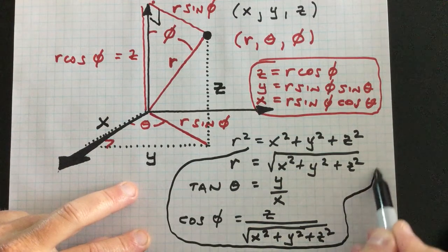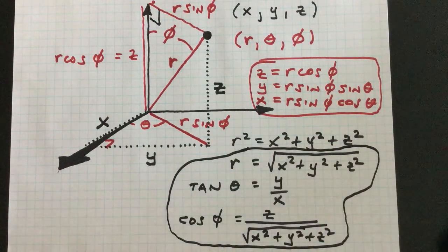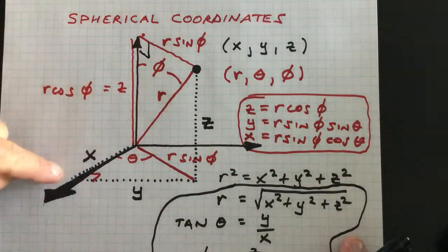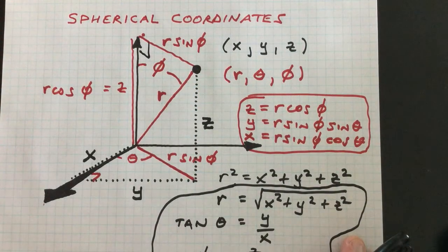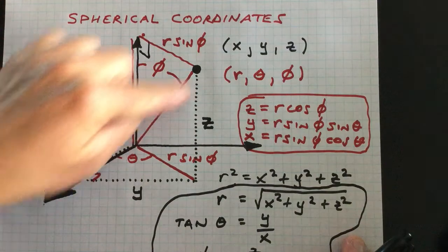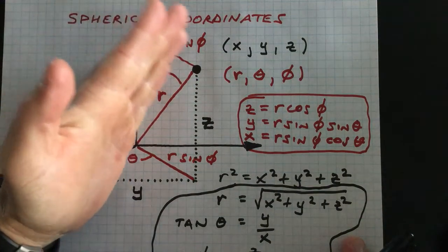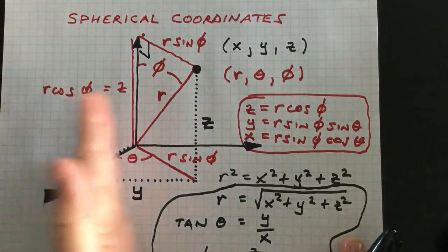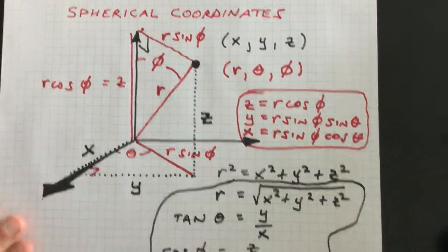In summary, Cartesian coordinates specify how far out, how far over, and how far up a point is. Spherical coordinates instead specify how far away from the origin you are, how much angle you crank away from the z-axis, and how much angle you crank away from the x-axis in the xy-plane, to locate that point.